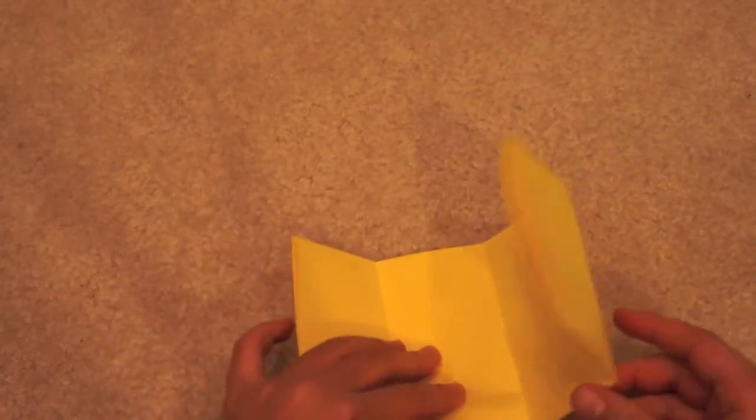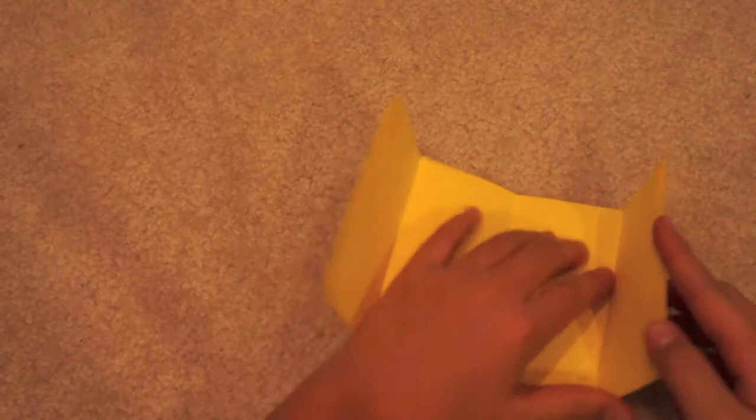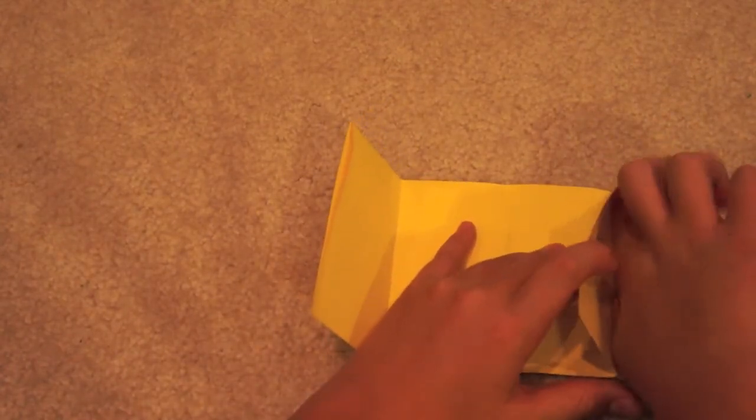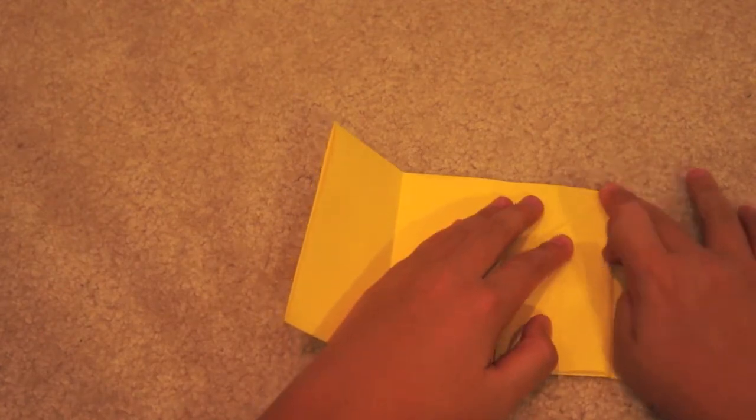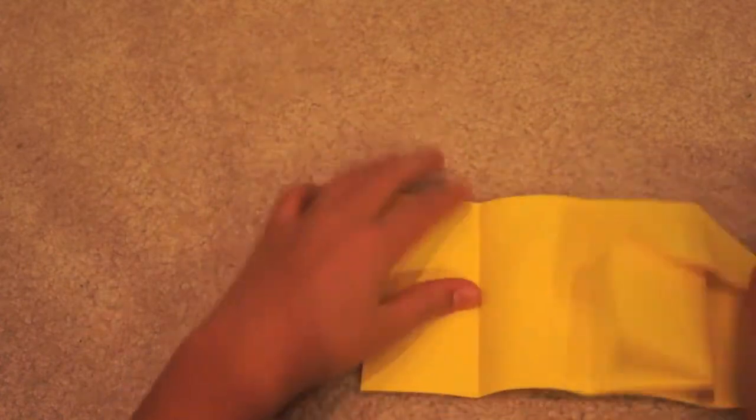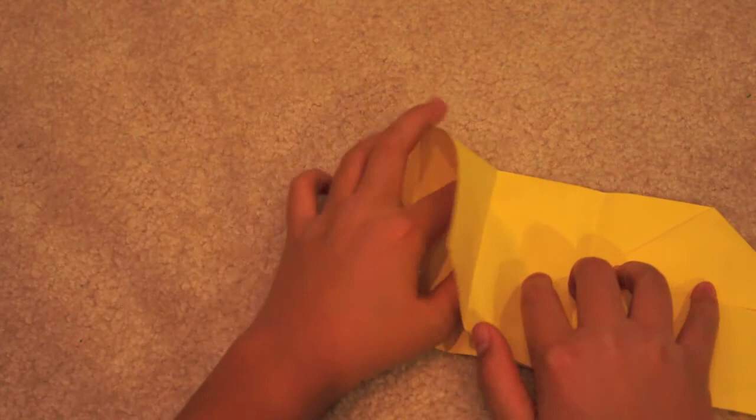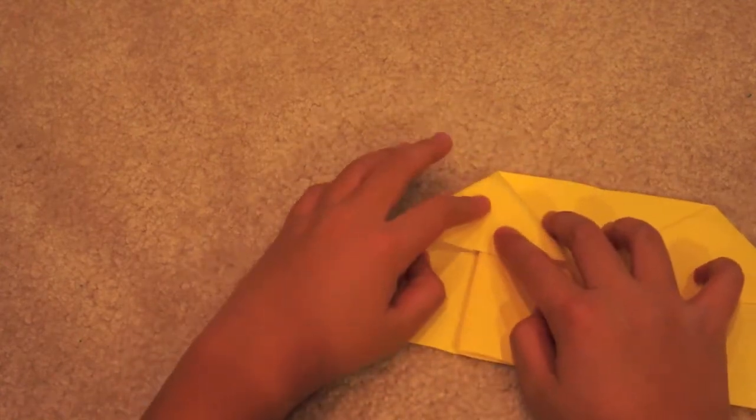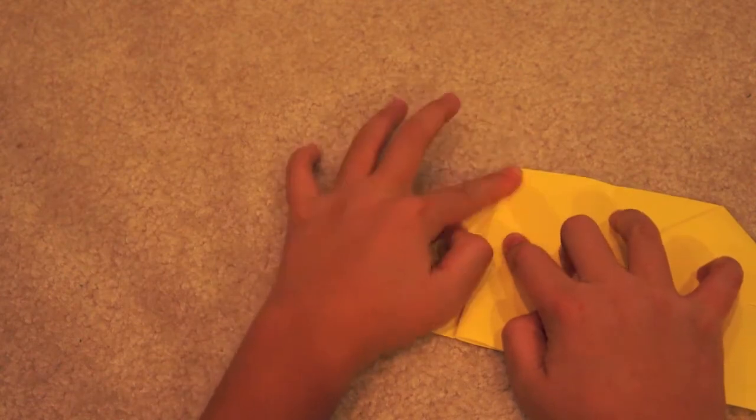After you folded it towards the middle, you need the open side to the bottom. You open one of the sides up and do a squash fold. Then make sure the folds line up with each other. You want to do that for both sides. This is called the organ base. After you've completed that, you're ready for the next part.